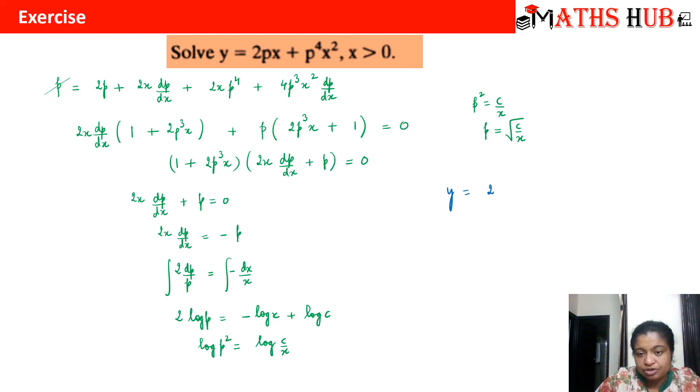We get the desired answer as y equals 2 times under root c by x times x plus p raised to power 4 will become c by x raised to power 4 times x square. This turns out to be 2 under root cx plus c square by x square. x square will get cancelled and I'll get y equals 2 under root cx. So this is your answer.